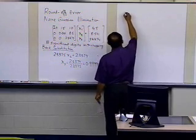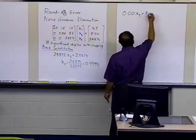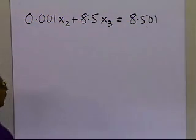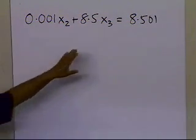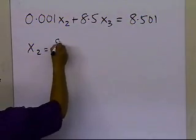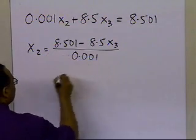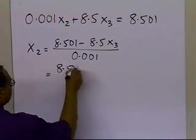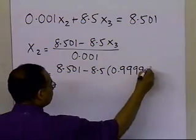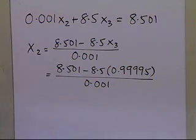Let's go and see what x2 will turn out to be. So in order to calculate x2, I need to write down the second equation, which is 0.001 x2 plus 8.5 x3 is equal to 8.501. This is my second equation when I expand it. I only know what the value of x3 is, so I can calculate what the value of x2 is. So x2 is 8.501 minus 8.5 x3 divided by 0.001. So I get 8.501 minus 8.5 times 0.9995 divided by 0.001.